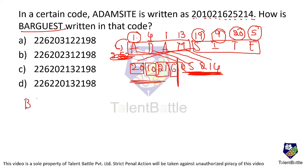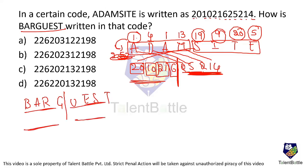Now let us apply this logic to 'bad guest'. We split the word: first four letters, then last four letters. The first four letters B, A, D, G have values 2, 1, 4, 7. Adding 1 gives 3, 2, 1, 9, 8 — wait, let us check the second half. U, E, S, T have values 21, 5, 19, 20. Looking at the options, only two options contain 3, 2, 1, 9, 8 — the others are eliminated.